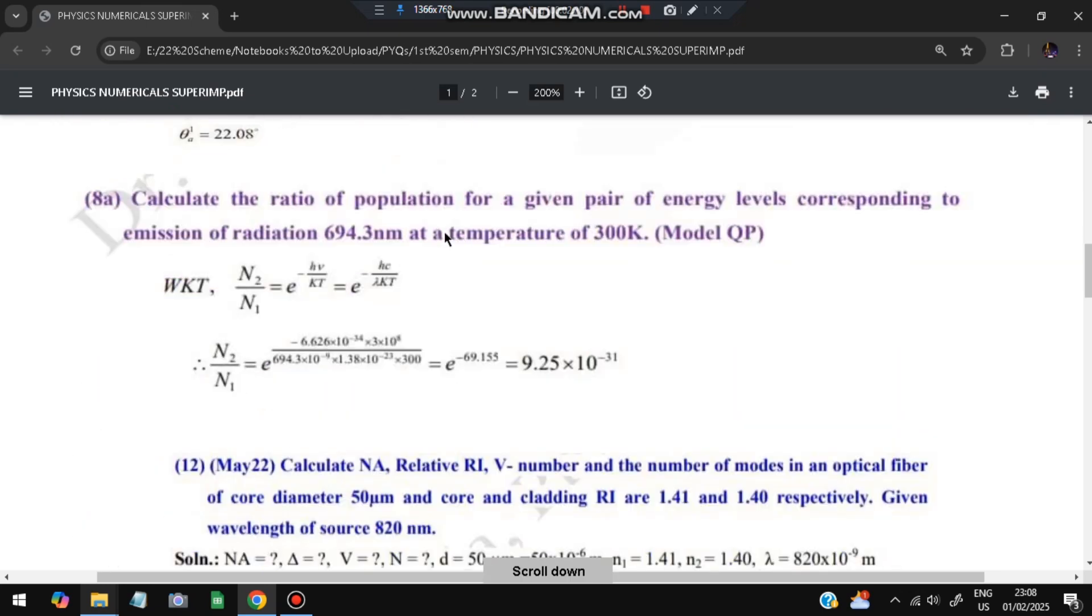Now the third type of question they can ask is related to the population ratio N₂/N₁. For that, they have given that the emission of radiation wavelength value and temperature value. Lambda and T are given. We'll use the formula N₂/N₁ = e^(-hν/kT), where k is the constant and lambda value is also given. h and c are constants; we'll substitute those values and find out it will be 9.25 × 10^-31.